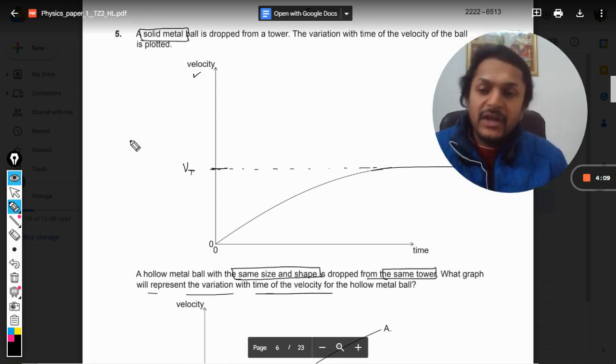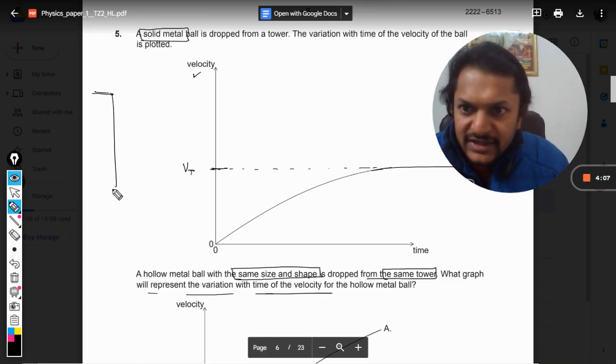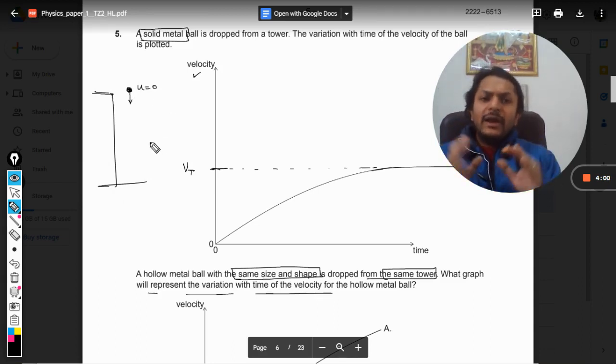In both cases there is this building and we are dropping the ball. U is given as zero. I tell you, it's not given in the IB books, but there is a formula for terminal velocity.